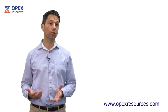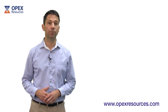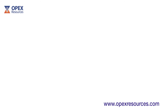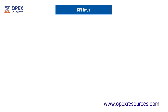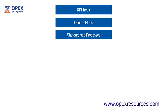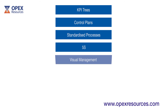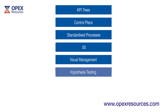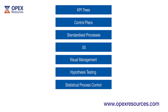Some of the tools that you might expect to use in the control phase are KPI trees, control plans, standardized processes, 5S, visual management, hypothesis testing, statistical process control, and project reports.